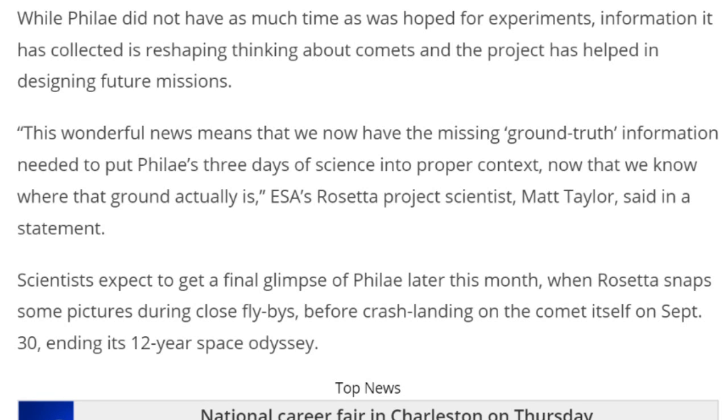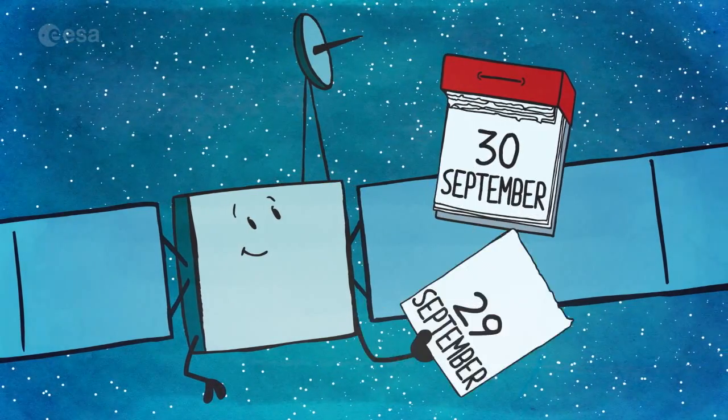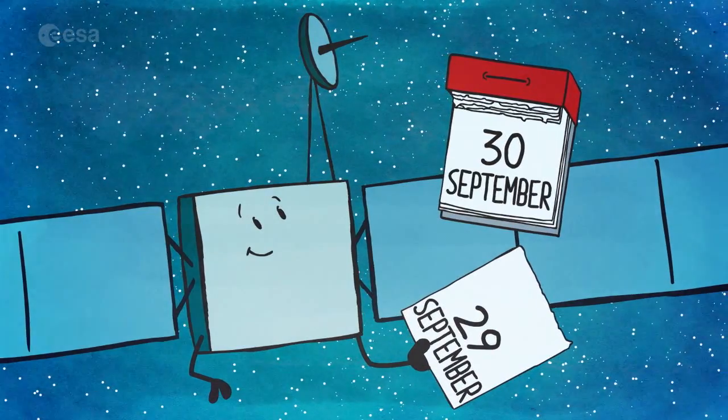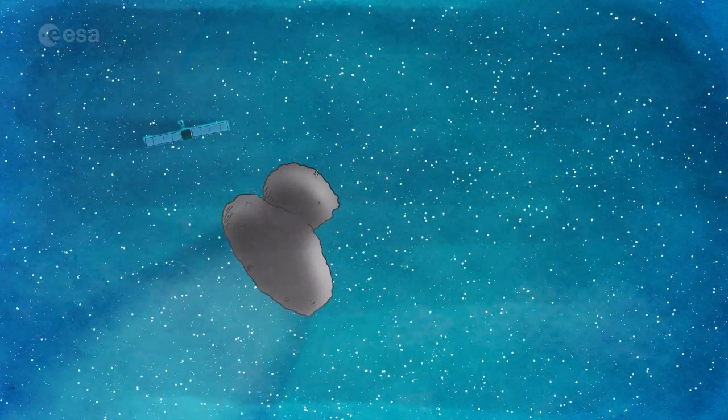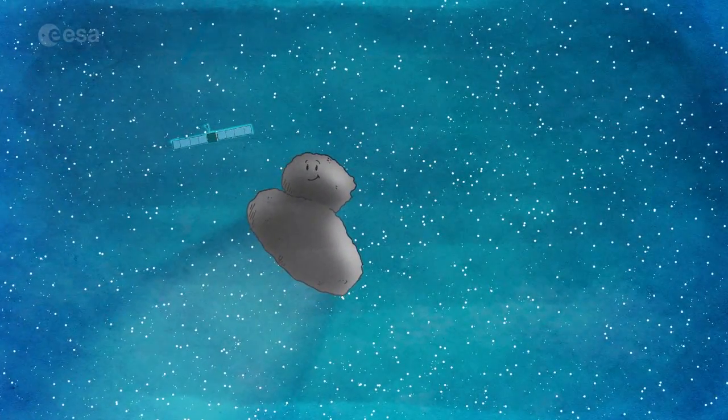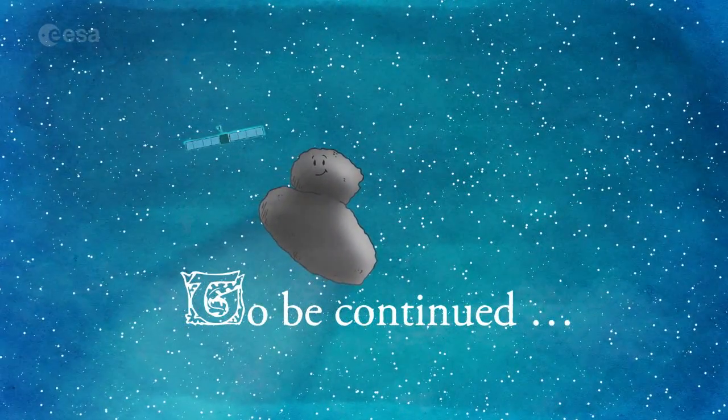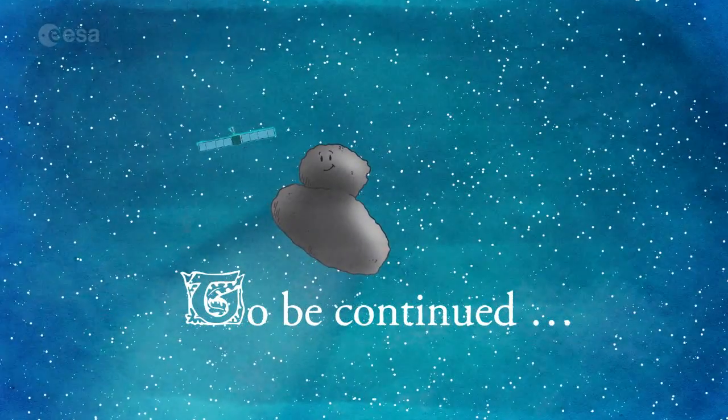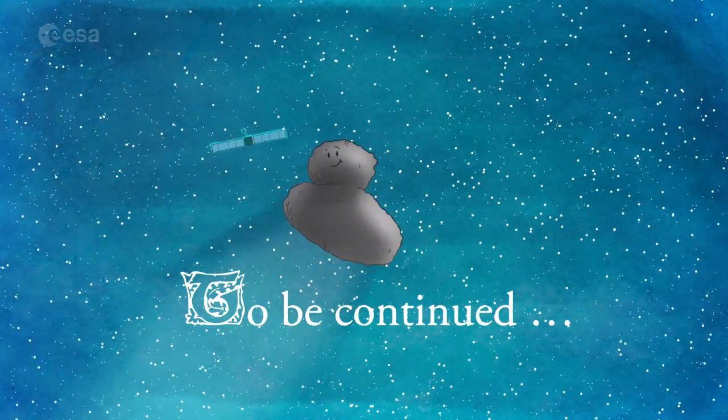Scientists expect to get a final glimpse of Philae later this month when Rosetta snaps some pictures during close flybys. And here's the doom: farewell Rosetta. Just like the Wookie, he's not getting a medal, and unlike the Wookie, she's getting crashed into the comet. Space mission to end on collision course with comet. Why is everything gotta be on a collision course?